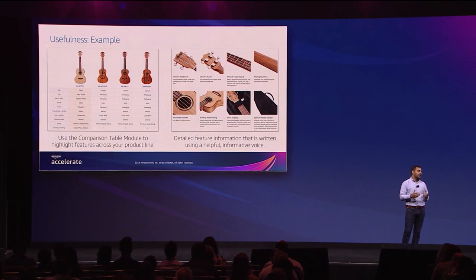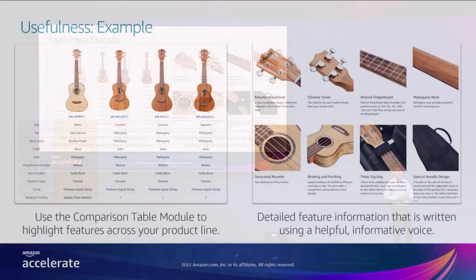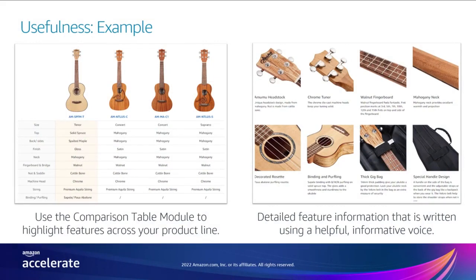Here's an example of how you can deep dive into product features and help shoppers in their buying decision. Use a comparison table to show different products in the same product line, or even complementary products in your brand as a cross-sell. Use text and images to highlight detailed information. Include specific data wherever applicable — for example, what materials are used, the craftsmanship, what comes with the product, and any other detailed aspects in close-ups. Always use an informative voice to highlight what makes your brand and products special.